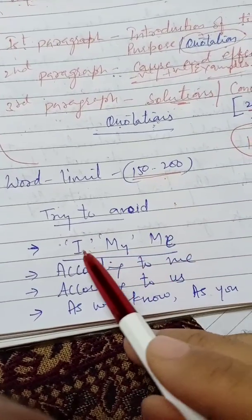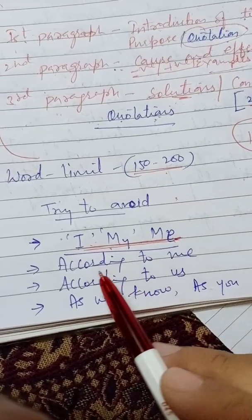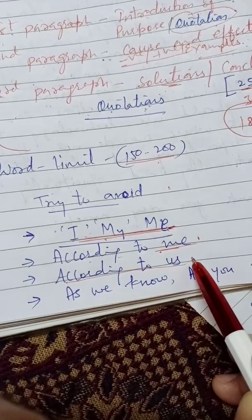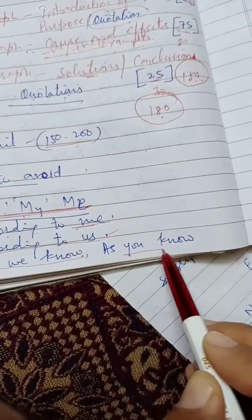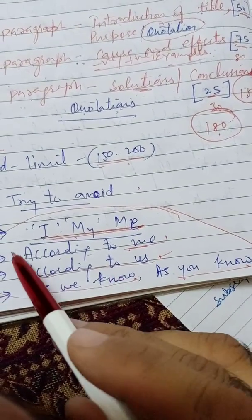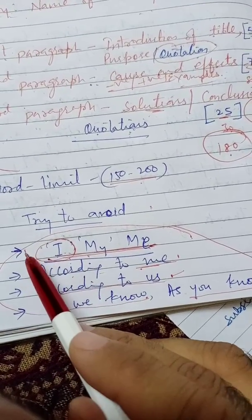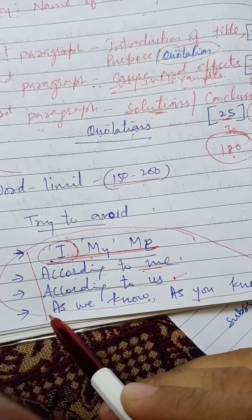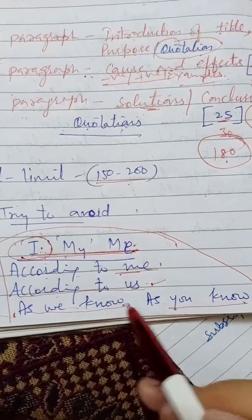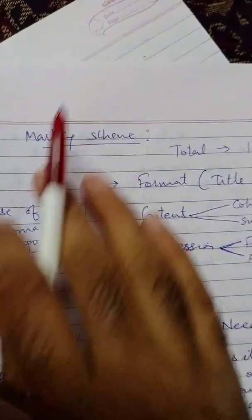Now certain things you need to take care of. Avoid personal pronouns — I, my, me. Also avoid phrases like 'according to me,' 'according to us,' 'as we know,' 'as you know,' and 'as I suggest.' Try to avoid these because personal pronouns are never used in article writing. These four types of expressions — personal pronouns, 'according to me,' 'according to us,' 'as we know,' and 'as you know' — must be avoided.